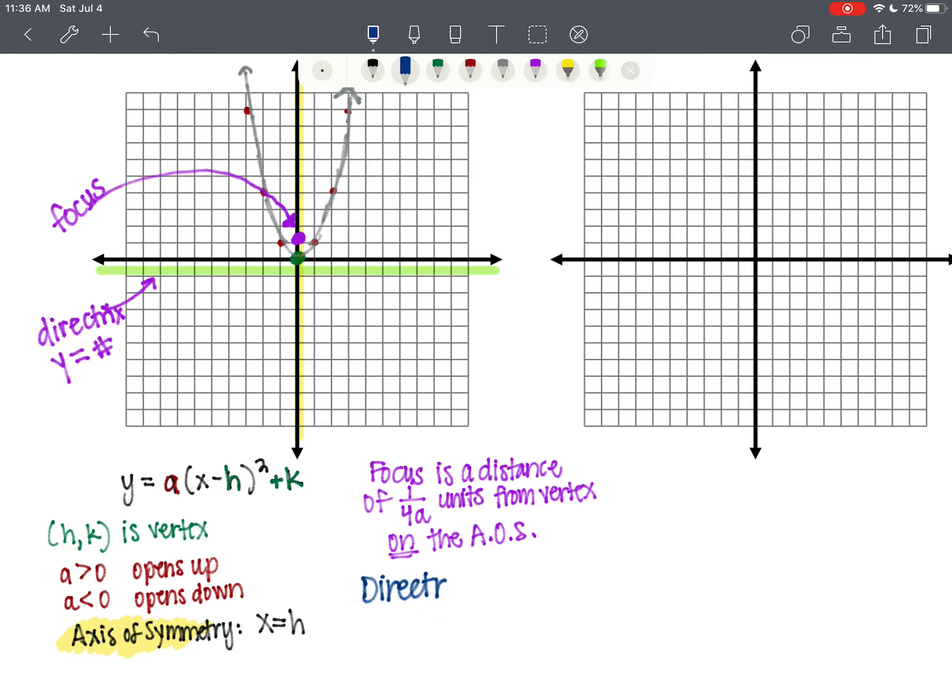So the directrix is 1 over 4a, so that's a numerical value. It's 1 over 4a units from the vertex, and it's a horizontal line. And it does not go from the vertex below. Actually, I don't want to say below because if it's opening up, not intersecting. That's a beautiful word right there. Not intersecting the parabola.